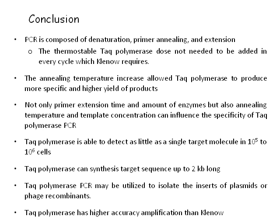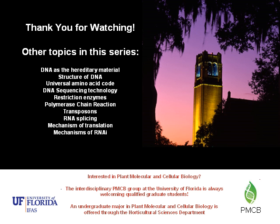In conclusion, the thermostable Taq polymerase can amplify products specifically, allowing primer annealing temperature to be increased during PCR. The specificity of Taq polymerase PCR is affected by the primary extension time, amount of enzyme, annealing temperature, and template concentration. Taq polymerase is able to amplify as little as a single target molecule in 10⁻⁵ to 10⁻⁶ cells, and targets as long as 2 kb. Also, Taq polymerase PCR may be applied to isolate the inserts of plasmid or phage recombinants. Thank you for watching, and please check out the other exciting topics in the series.